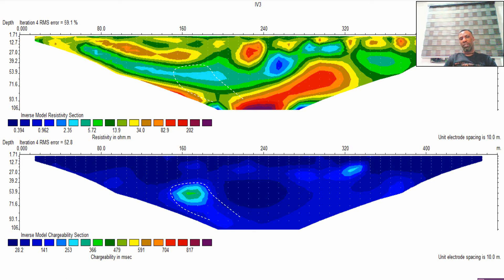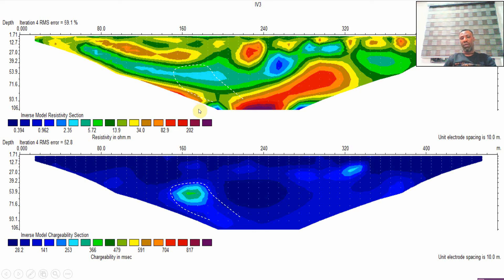Now look at the depth of occurrence and where it is actually occurring. Looking at the horizontal distance, it's about 160 to 180 meters, dipping from 150 meters down. You can see the dip angle is almost about 40 to 50 degrees — counting along the profile you get approximately 50 to 60 degrees — so that gives you an idea of the angles.